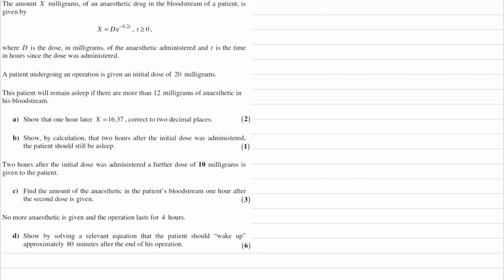We're told that the amount x milligrams of an anaesthetic drug given to a patient is given by this equation. So x is d e to the power of minus 0.2 t, and t is greater than or equal to 0. d is the dose in milligrams of anaesthetic administered — the initial dose — and t is the time in hours.